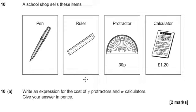let's just pretend it said how much would it cost if you bought three protractors and five calculators. Well we'd do three lots of the price of the protractor and we'd add on five lots of the cost of the calculator.